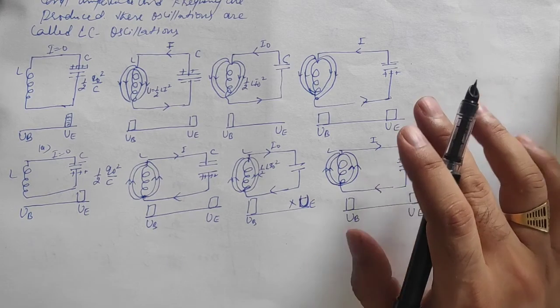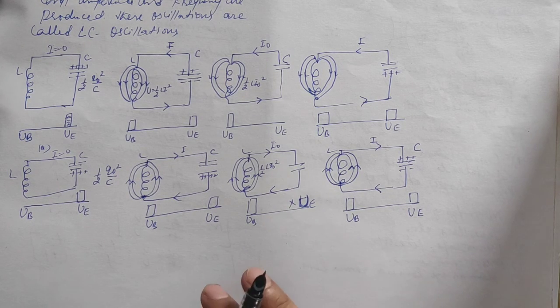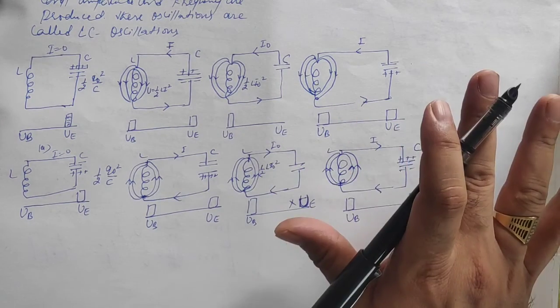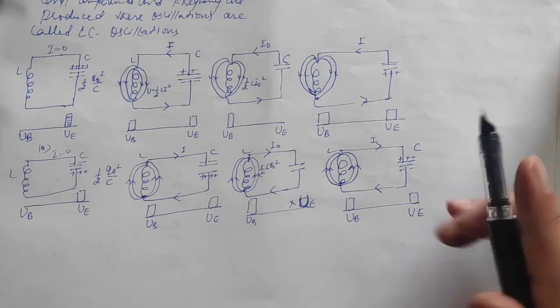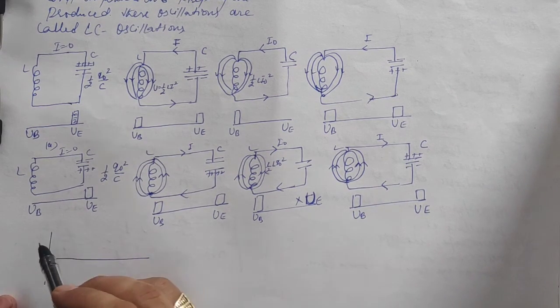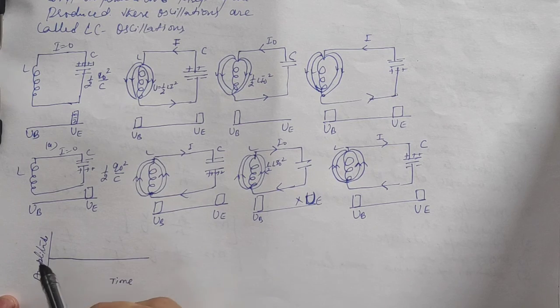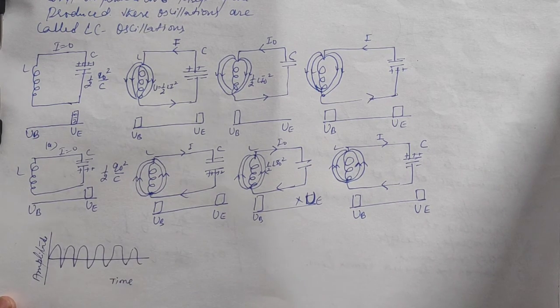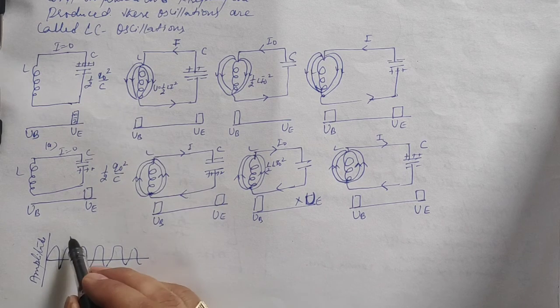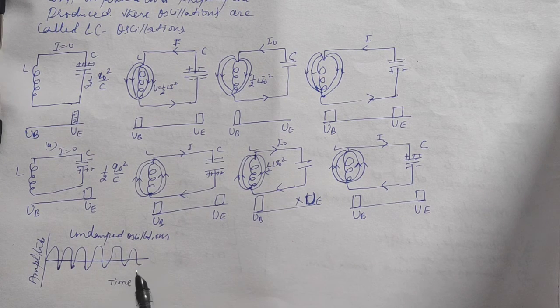If there is no loss of energy in LC oscillations, the amplitude of the oscillation will remain undamped. The amplitude remains constant. Now if we plot amplitude versus time, showing increase, decrease, increase, decrease, you can see these are undamped oscillations.